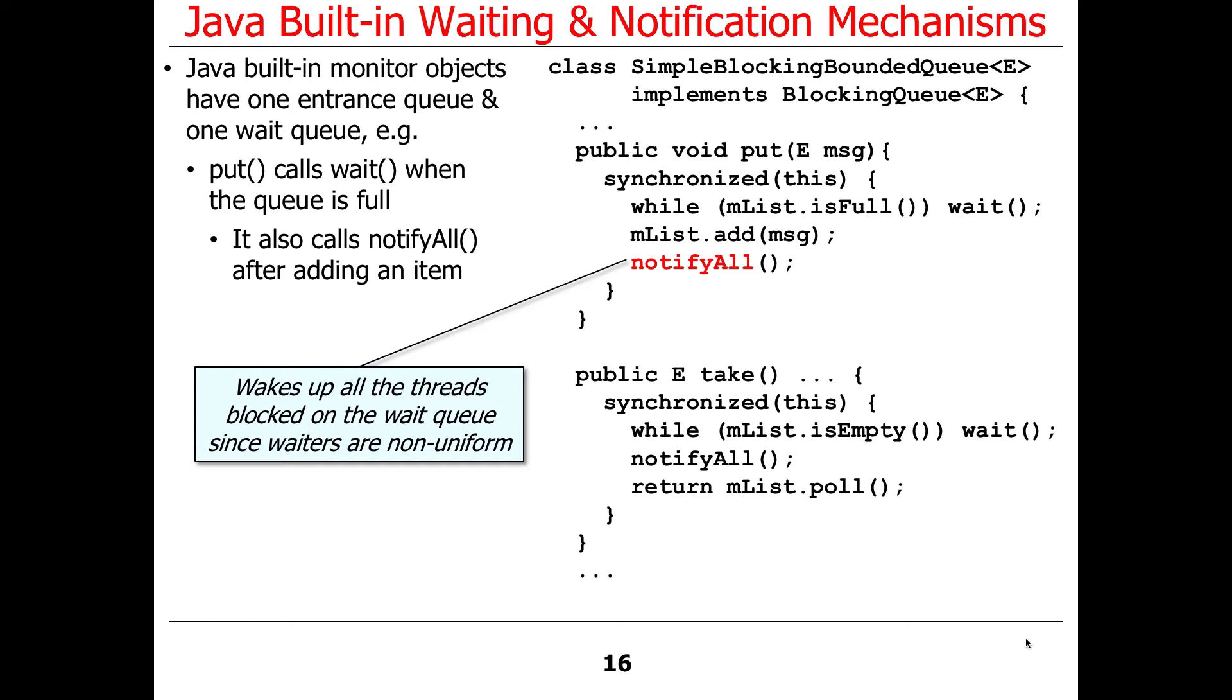That's the concept of guarded suspension, the guarded suspension pattern. You can only make progress when the condition is true, or not true. While the condition is full, we have to wait. When the condition is not full, we can proceed. Once we get access to the critical section, remember we're the only one running in here now, we're going to add the message to our list.